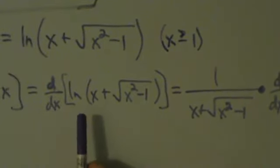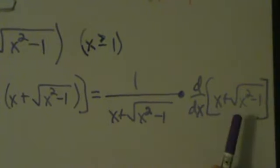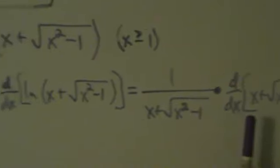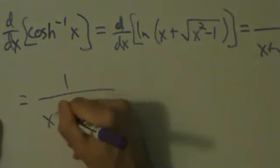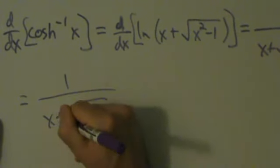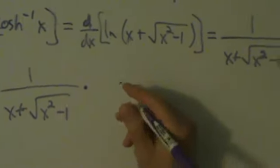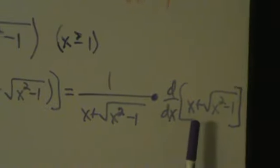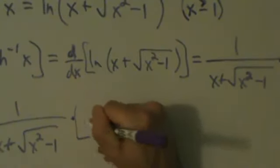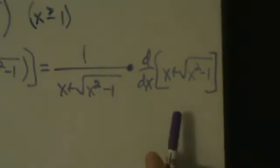Chain rule says the derivative of the natural log of something is 1 over that something times the derivative of that something. So this equals 1 over x plus root x squared minus 1, times the derivative of the expression. We're going to differentiate term by term. The derivative of the first term x is just 1. The second term, root x squared minus 1, is the messy part.